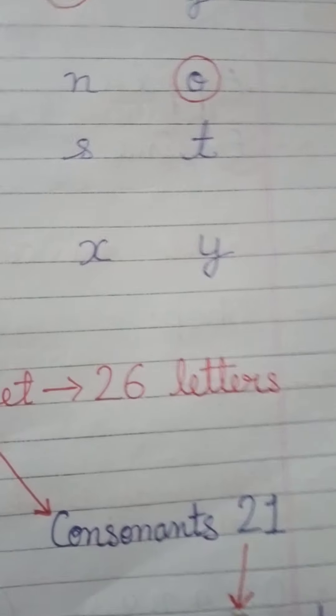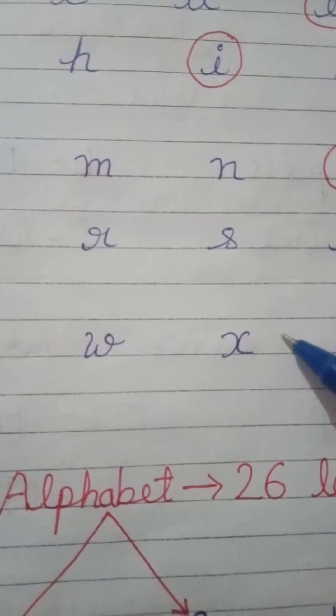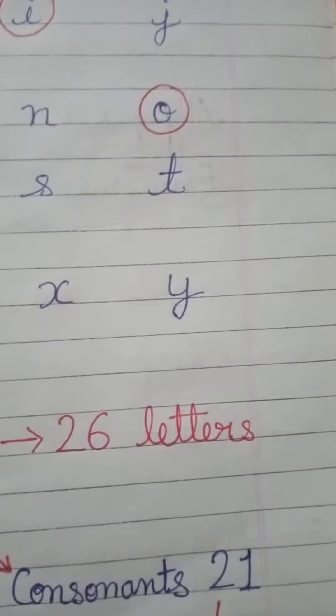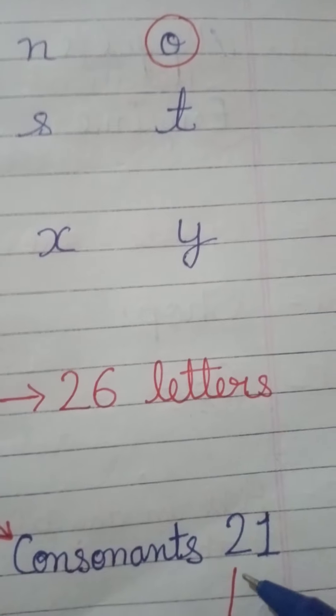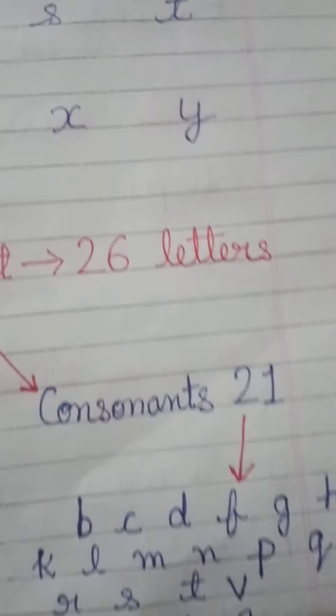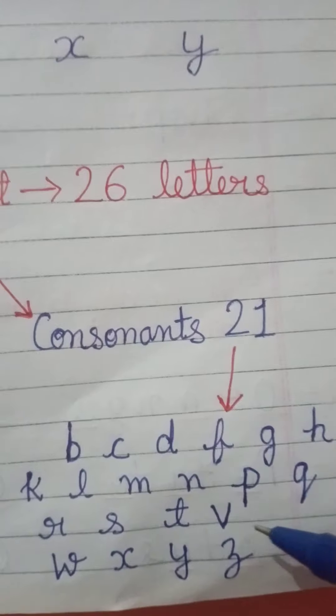After this, the remaining letters that are left, what do we call them? Consonant. Consonants, which are twenty-one in number. The remaining letters are called consonant.